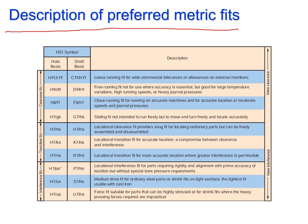From here you can see different tolerances assigned to hole and shaft based on their basic size and type of fit — whether it is loose running, close running, or locational clearance fit. For example, H11/C11 is for loose running fit for wide commercial tolerances. These are the clearance fits and their different types, with their design applications given.